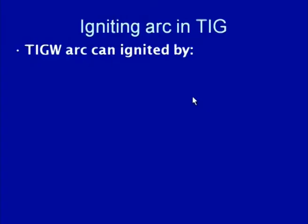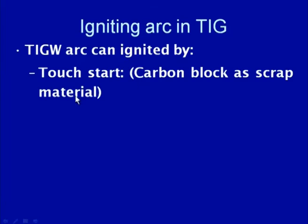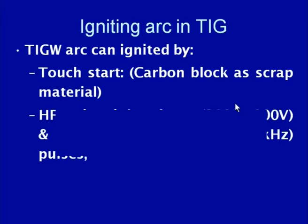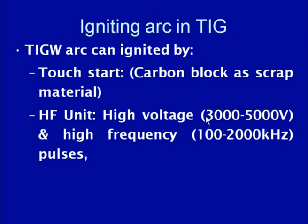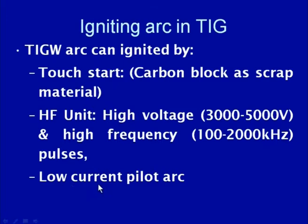The TIG arc can be ignited by three methods. One is the touch start where a carbon block is used as scrap material. The second is the high frequency unit where a pulse of high voltage on the order of 3000 to 5000 volts is supplied at very high frequency so that the arc is ignited.